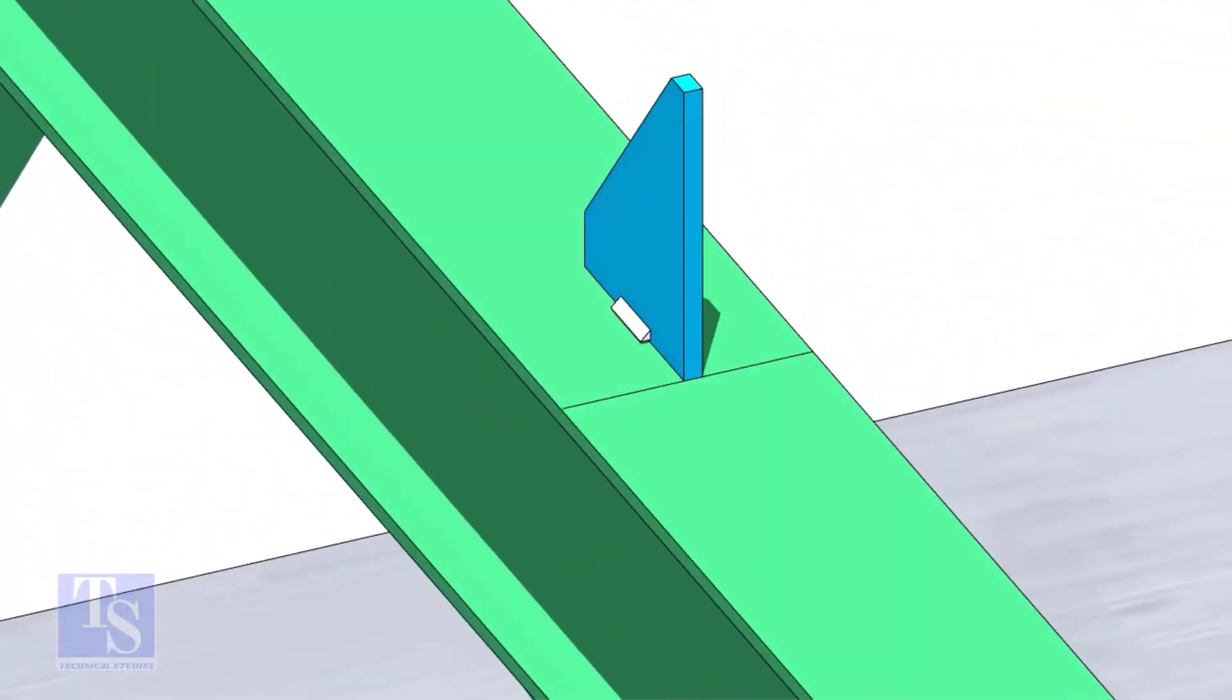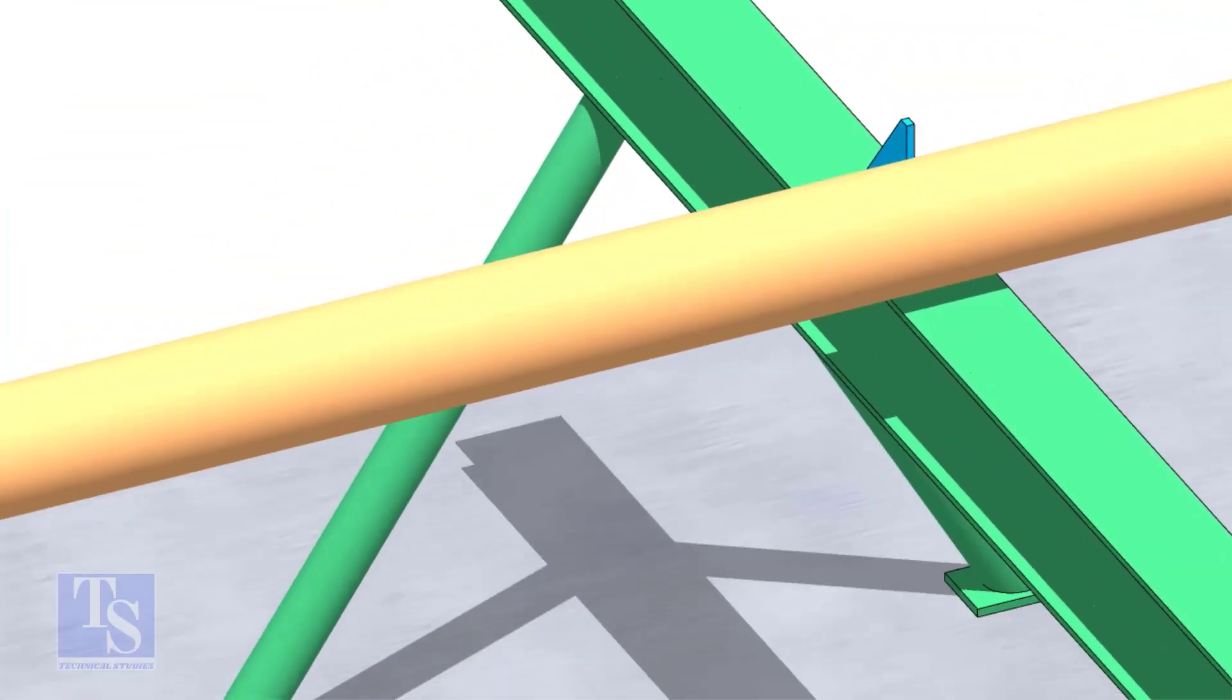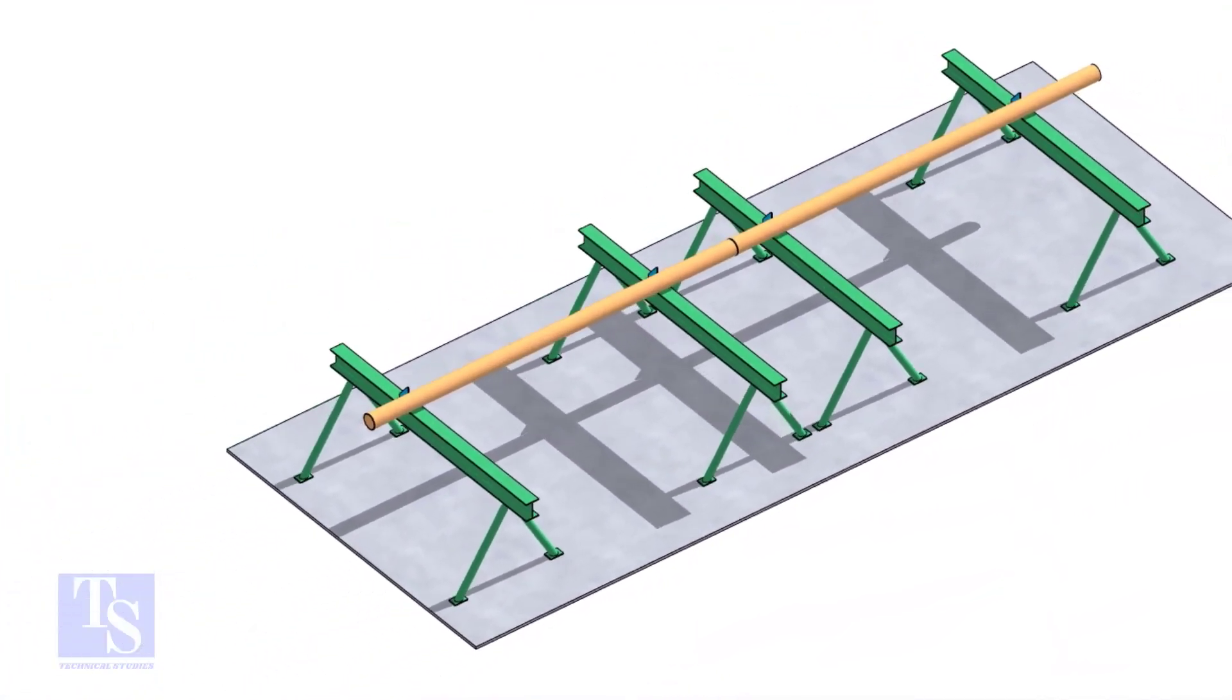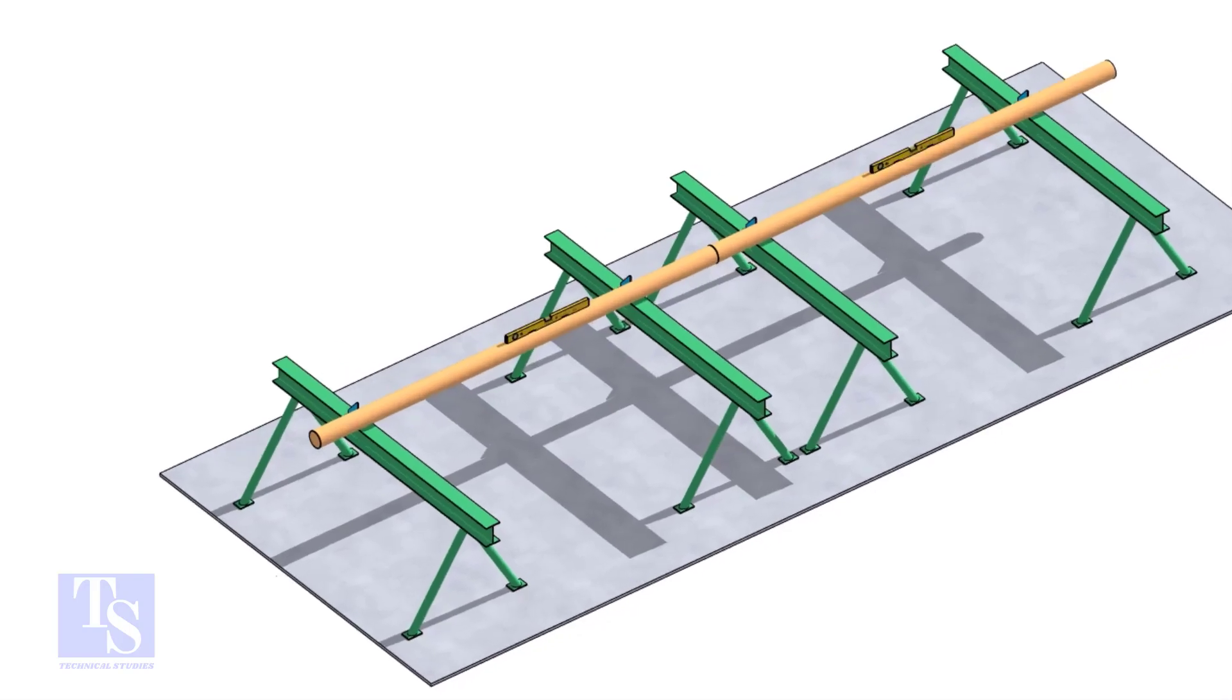Put the pipes on the stands, touching the stopper plates, as shown. The joint shall be in between the supports. Now the pipes are already straight, horizontally and vertically.